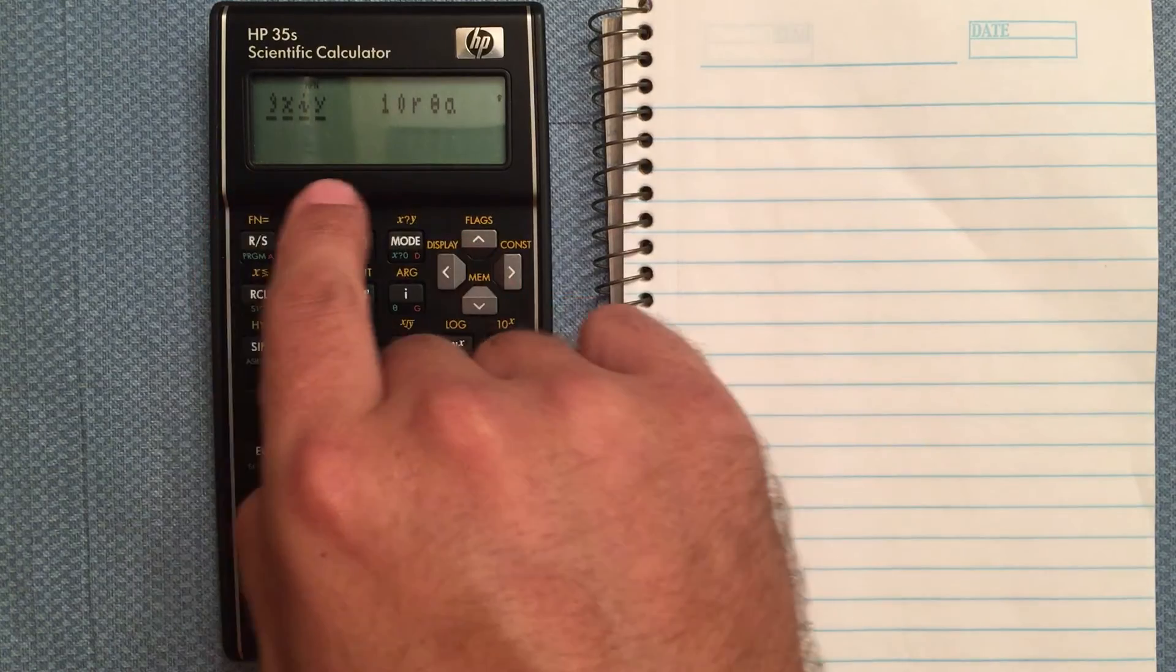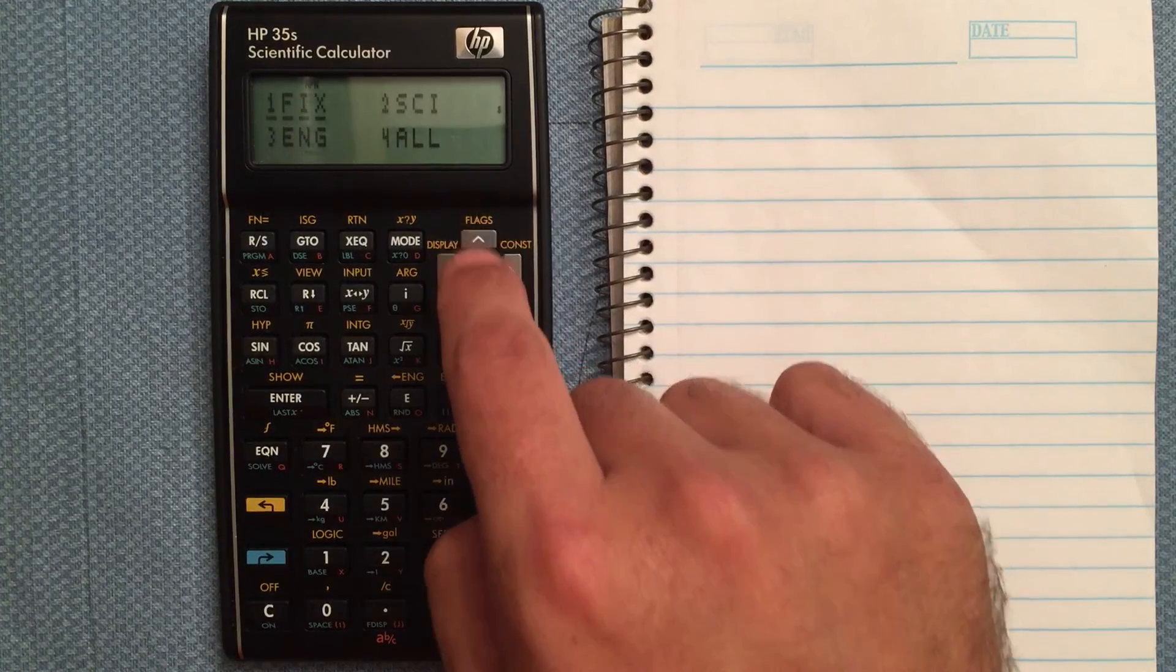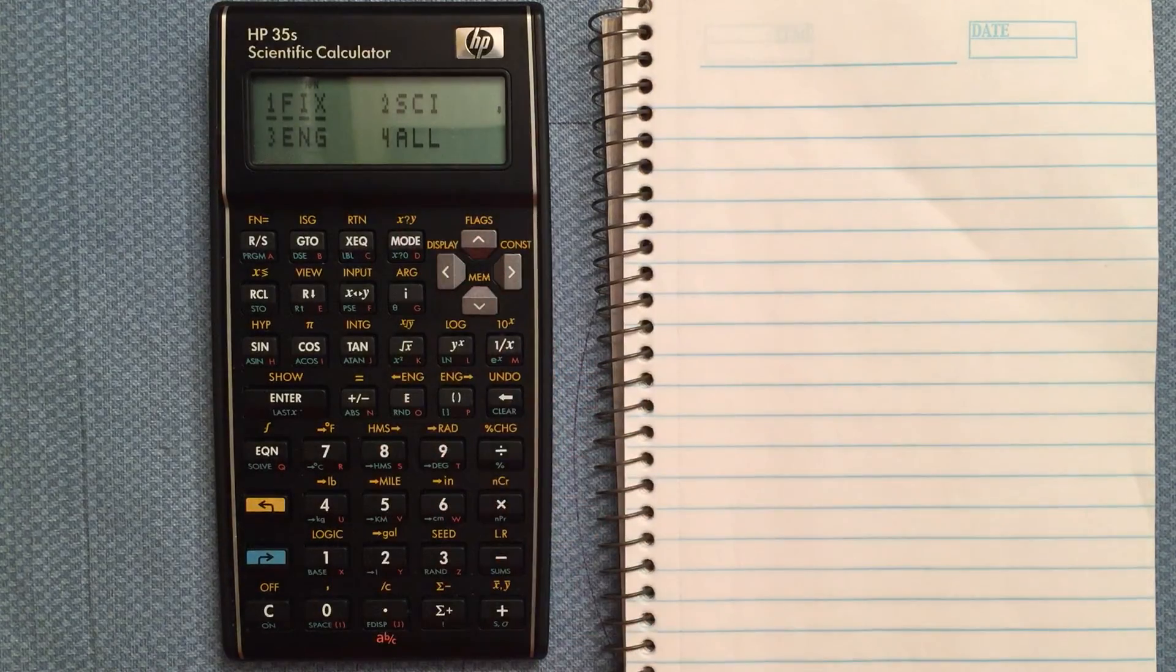Here's your rectangular notation and your polar notation for complex numbers. So that's it for the mode and display menus.